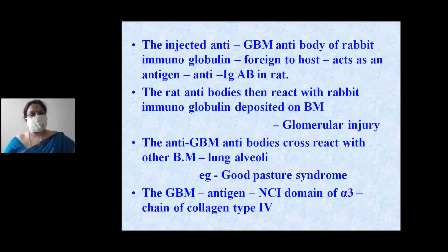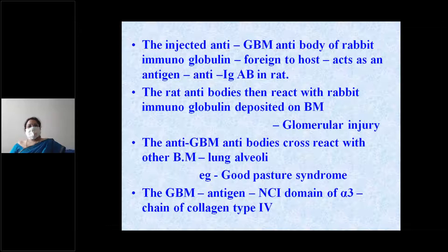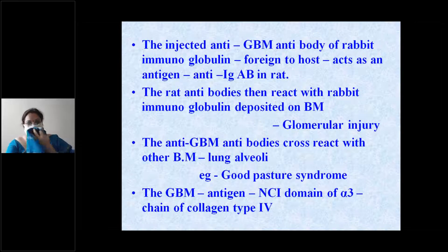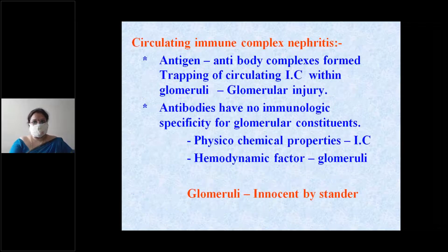The antigen in the glomerular basement membrane is the NC1 domain of alpha-3, which is nothing but a chain of collagen type 4 antigen. So the NC1 domain of alpha-3 is the key antigen in the glomerular basement membrane.